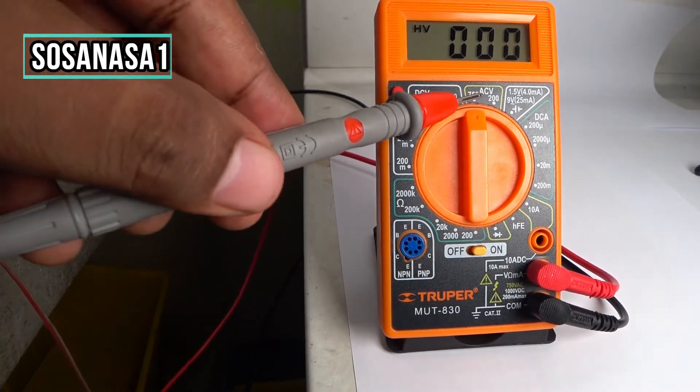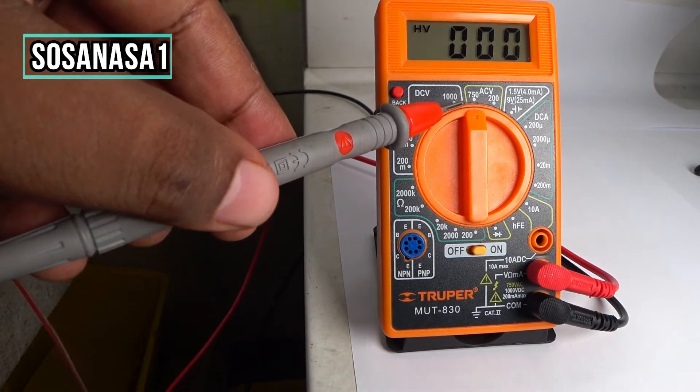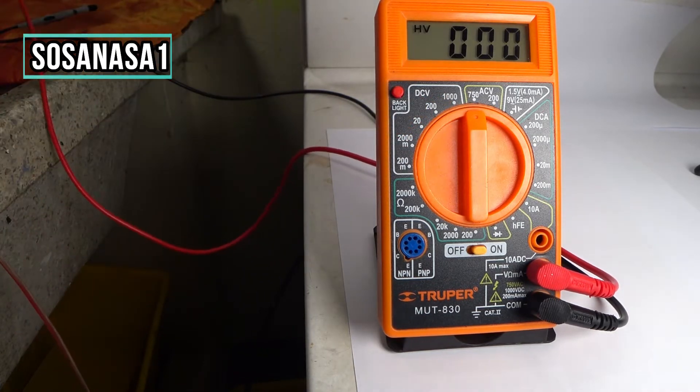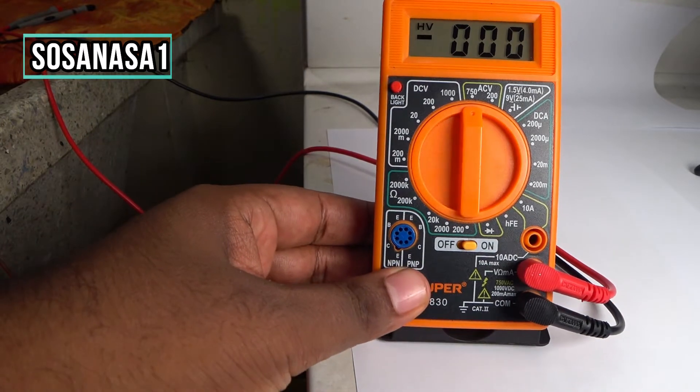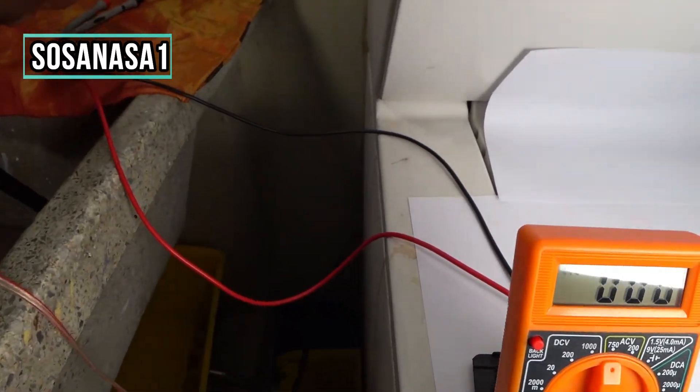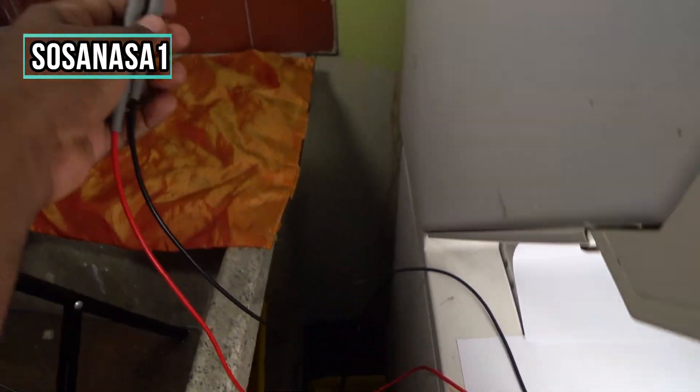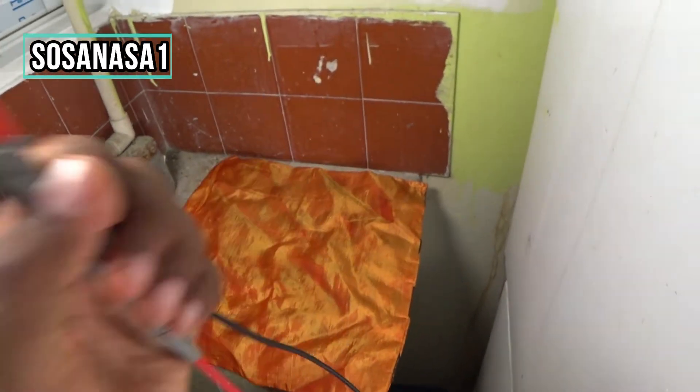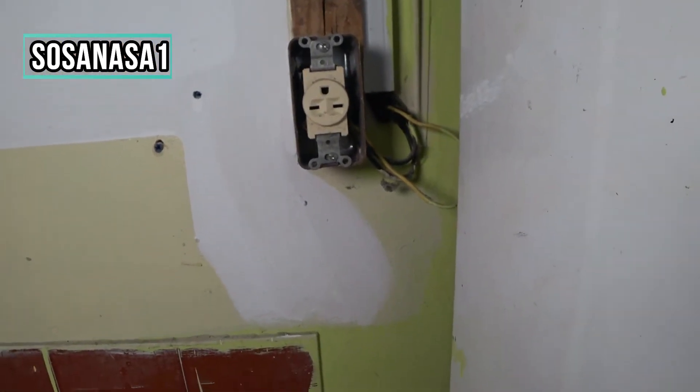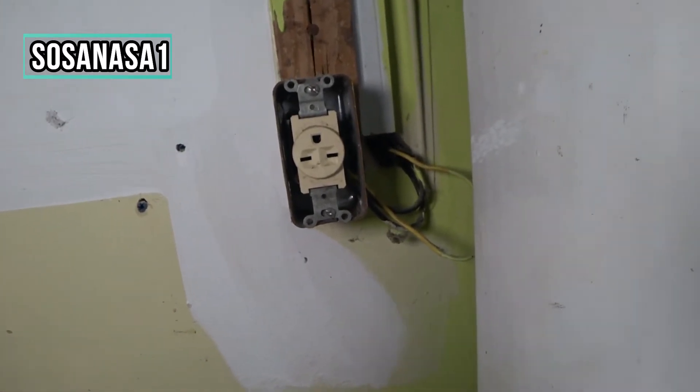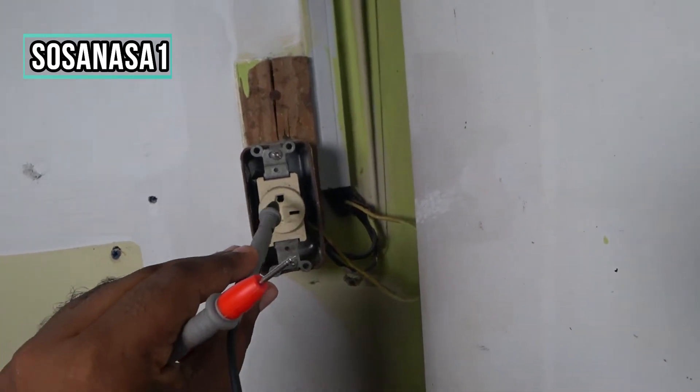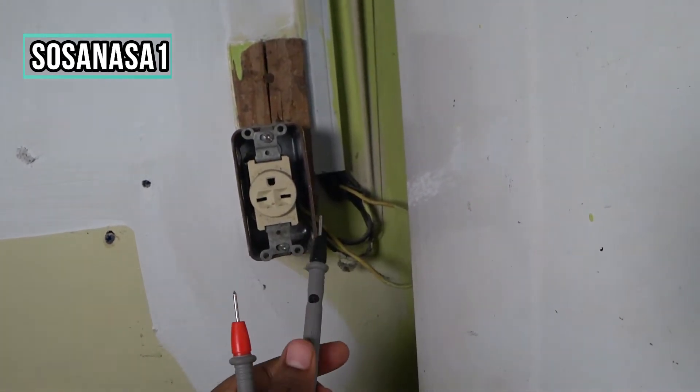Now our digital multimeter is ready. Now let's take this tip, and in this case we are going to use, like for example, this power outlet. Now introduce first here in this position. It's ready.